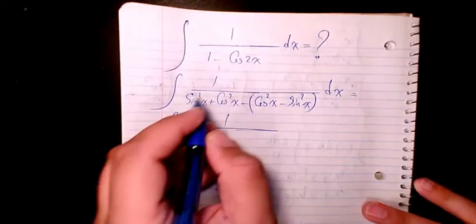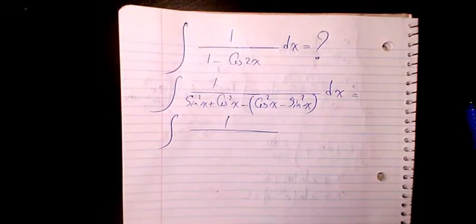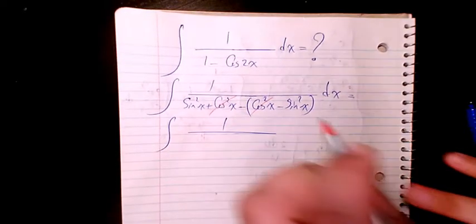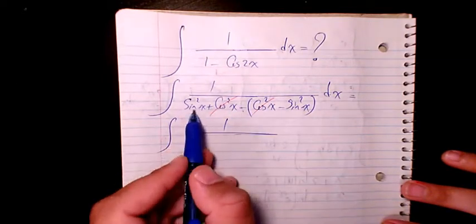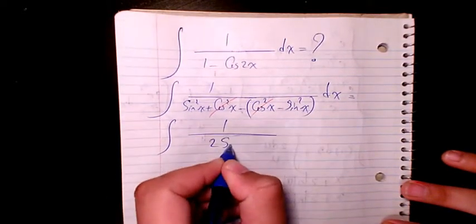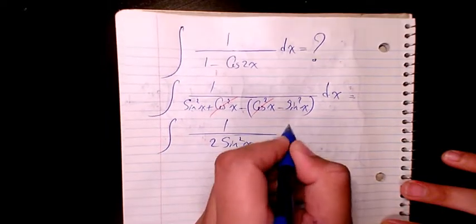That changes to these two cancel out cosine minus cosine. That will make it positive. So sine squared x plus sine squared x is going to be 2 sine squared x dx.